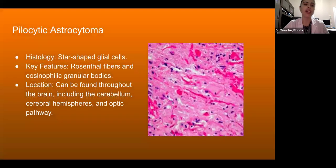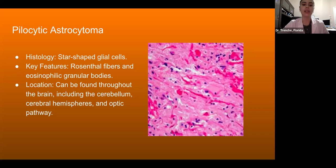Then we have pilocytic astrocytoma, and they are star-shaped glial cells. They have Rosenthal fibers and eosinophilic granular bodies, and they can be found throughout the brain, including the cerebellum, cerebral hemispheres, and optic pathway.